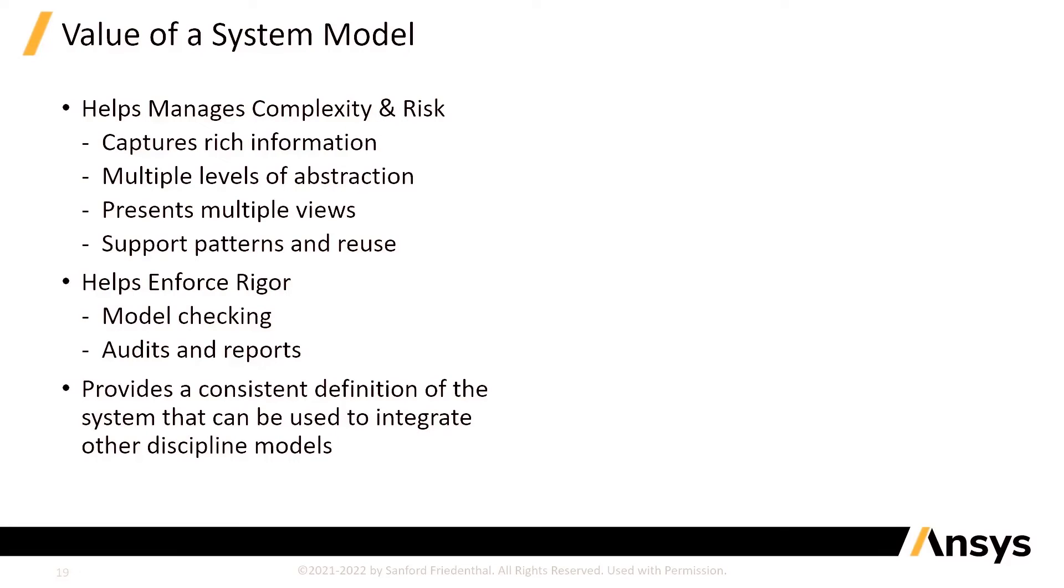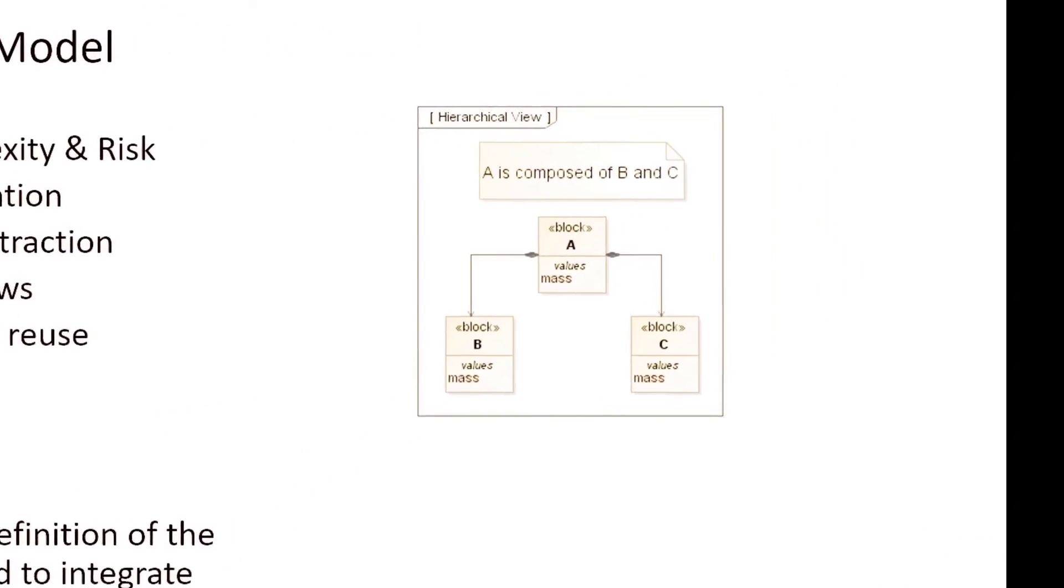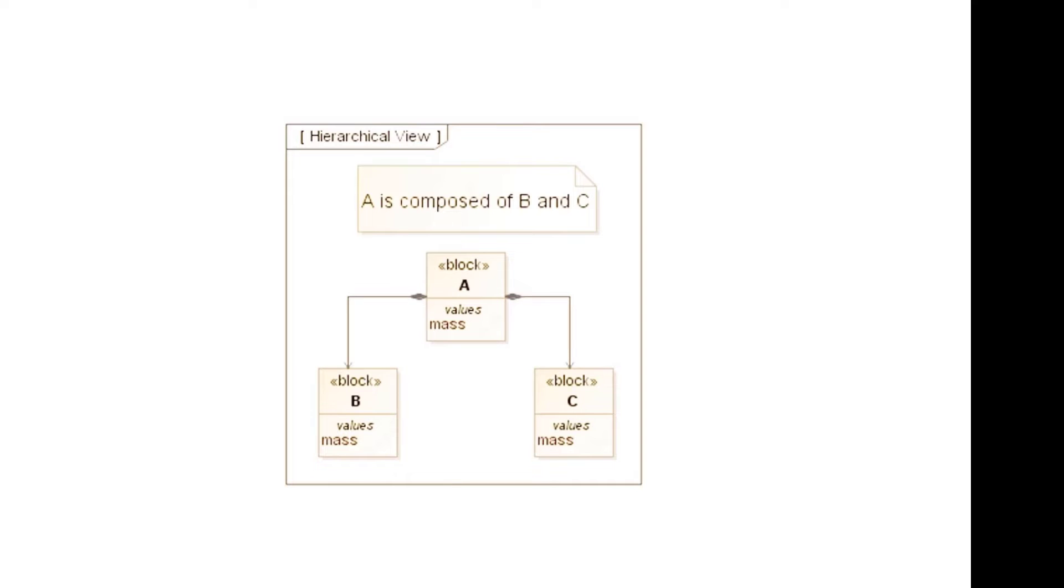Let's look at a very simplest model. Here we see an example of a SysML model where you see this block whose name is A and a block whose name is B and another block named C and a relationship between A, B, and C. So, think of block A as your system, think of block B and C as two subsystems. And what this model says is that block A is composed of B and block A is composed of C. So, you're defining the decomposition of your system. And the beauty is you can say this one time in your model and everybody can use it and have access to it.